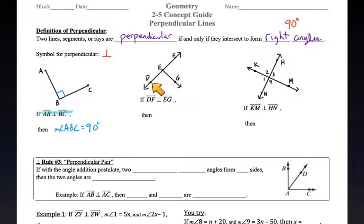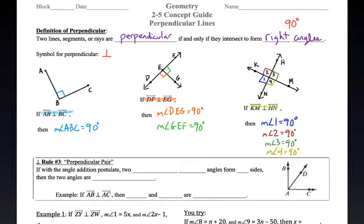If you have a ray or a segment popping out of a line or a segment or a ray like this, now we have two right angles. So that's what we know for a fact.